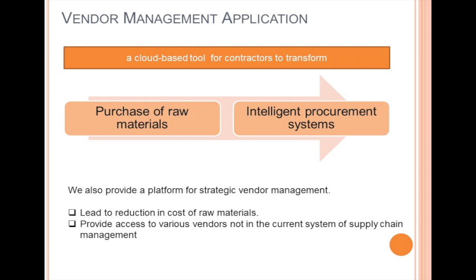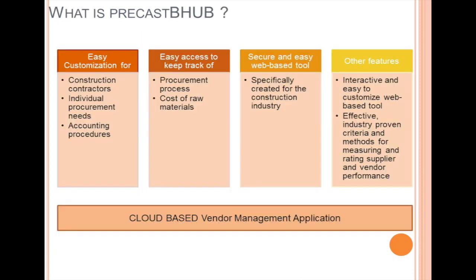Precast B-Hub provides a platform for strategic vendor management, which will lead to a reduction in the cost of raw materials, and provide access to various vendors not currently in the system of supply chain management. We provide a cloud-based vendor management application that can easily be customized for the individual procurement needs and accounting procedures of construction contractors. This tool can be accessed across the management to keep track of procurement processes and cost of raw materials. It's a secure and cloud-based application specifically created for the construction industry.